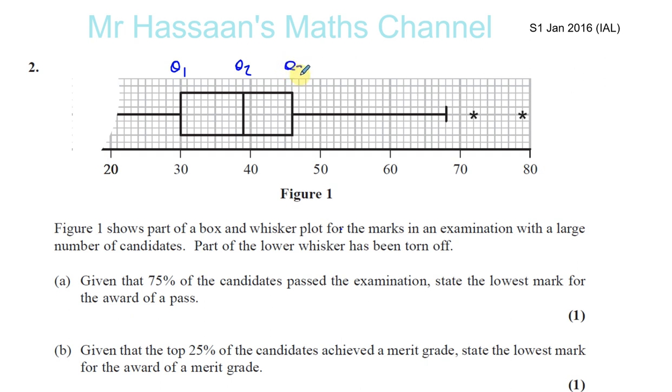So the top 75% of the students are going to be from the ones that got the highest marks downwards. So the top 75% are going to be the ones that got more than 30, which is the lower quartile. So that's going to be the pass mark.